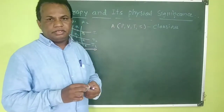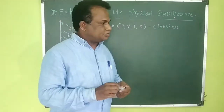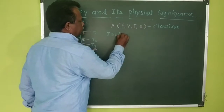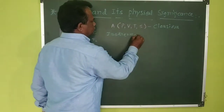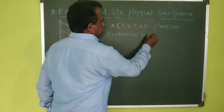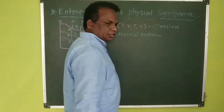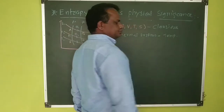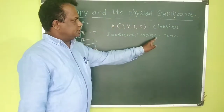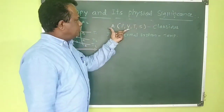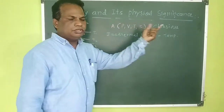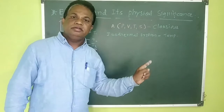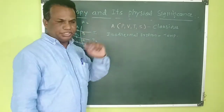Clausius introduced the concept of entropy. In an isothermal system, temperature remains constant when the system changes from one state to another state. All other quantities may or may not change, but temperature stays constant throughout.